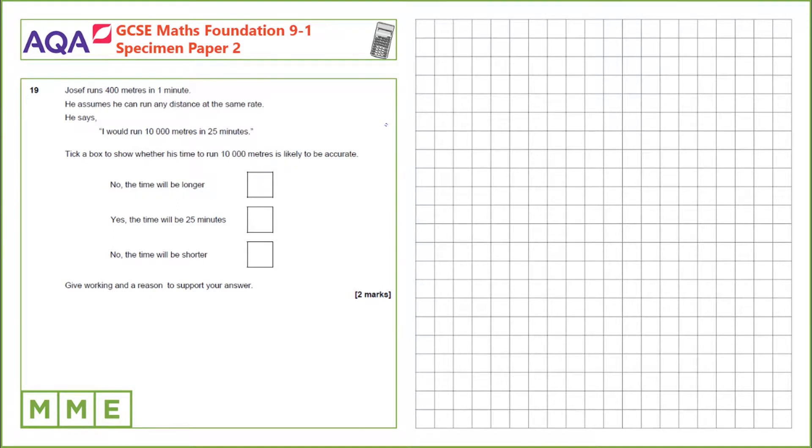Question 19. Josef runs 400m in 1 minute. He assumes he can run any distance at the same rate. He says I would run 10,000m in 25 minutes. Pick a box to show whether his time to run 10,000m is likely to be accurate.